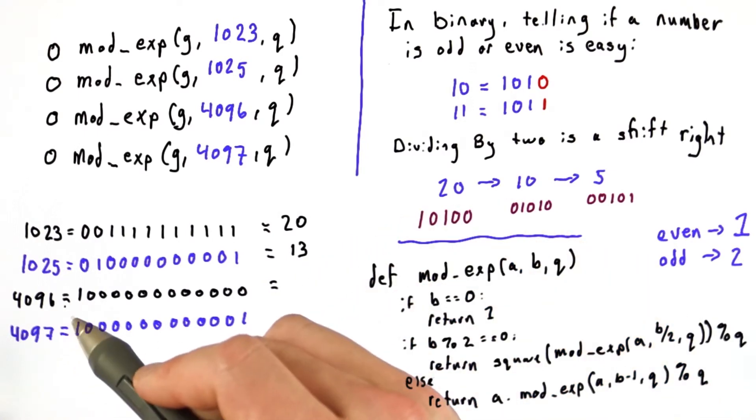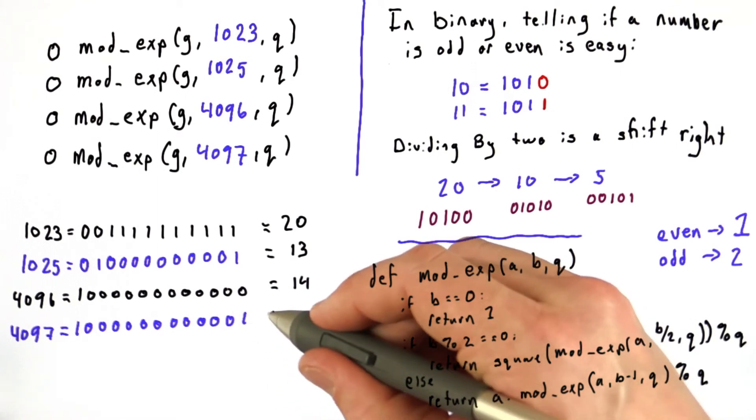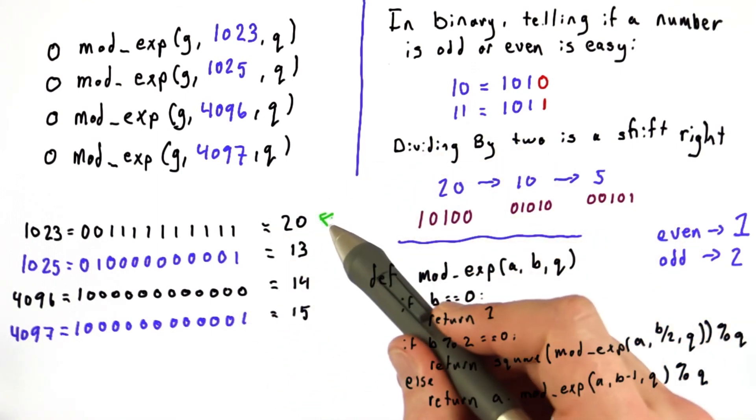4096 should be 1 followed, hopefully, by 12 zeros, gives a cost of 14. And 4097 gives a cost of 15. So 1023 is our most expensive operation, and that is our correct answer.